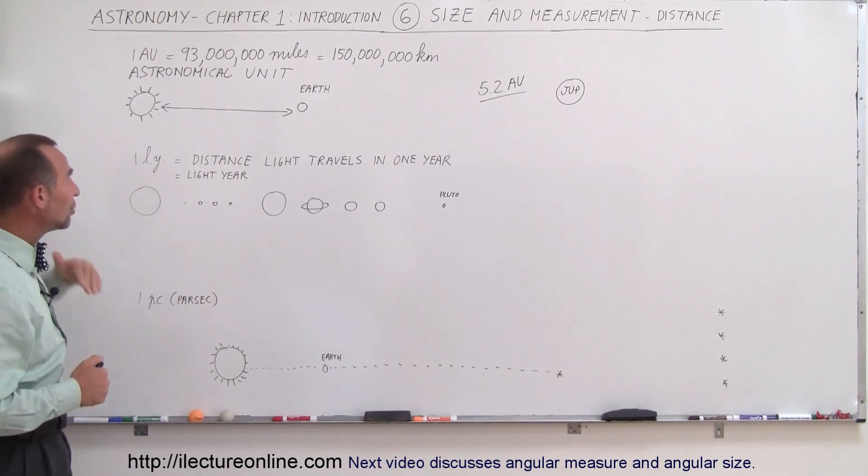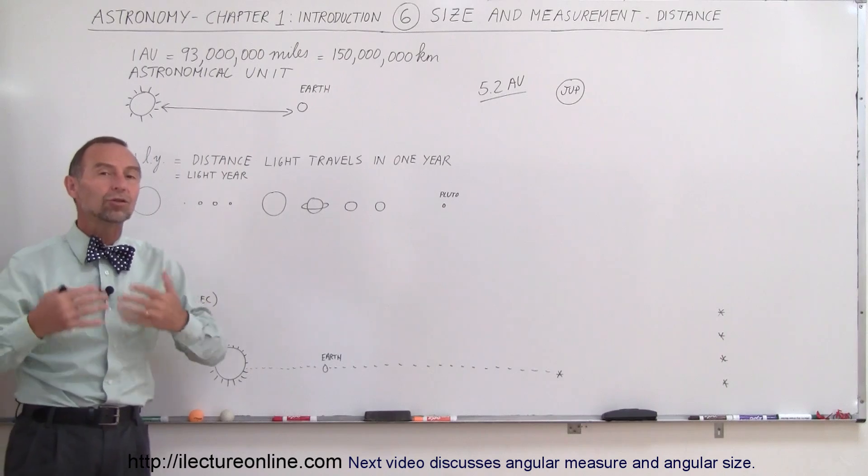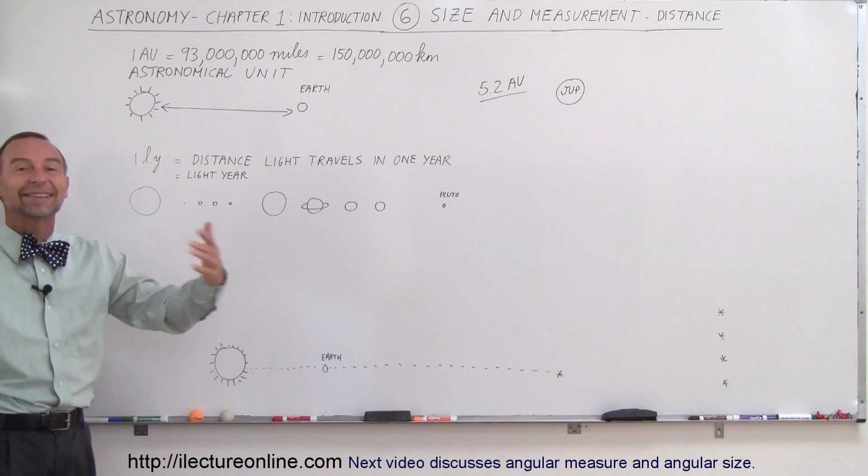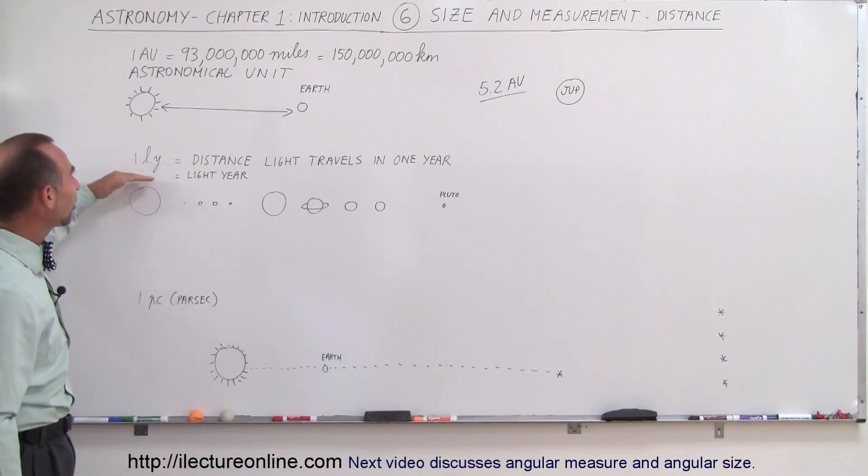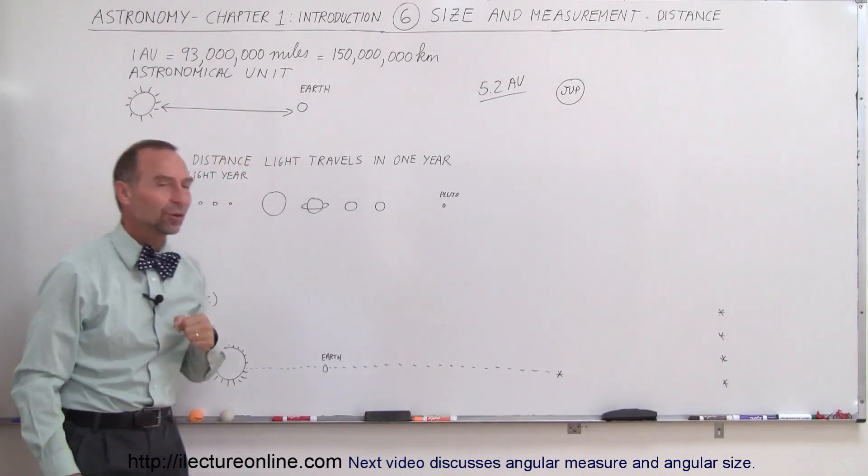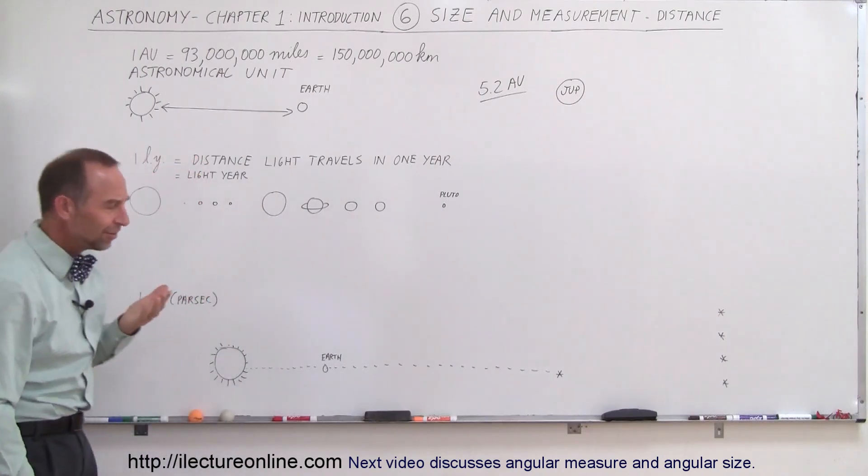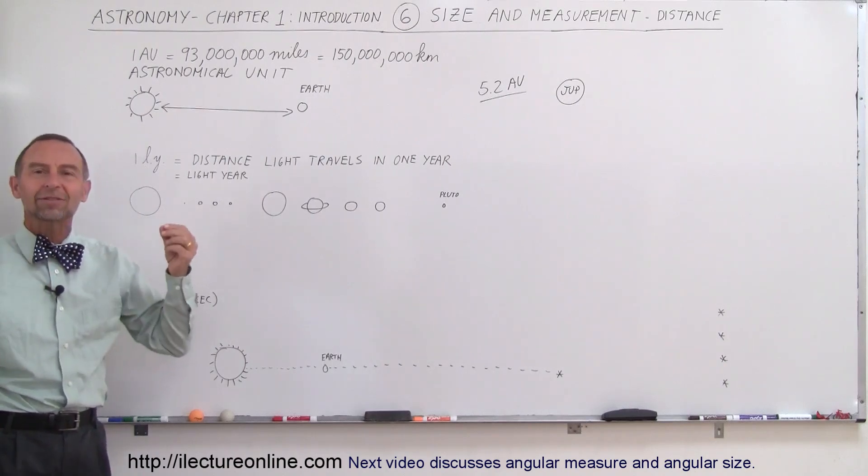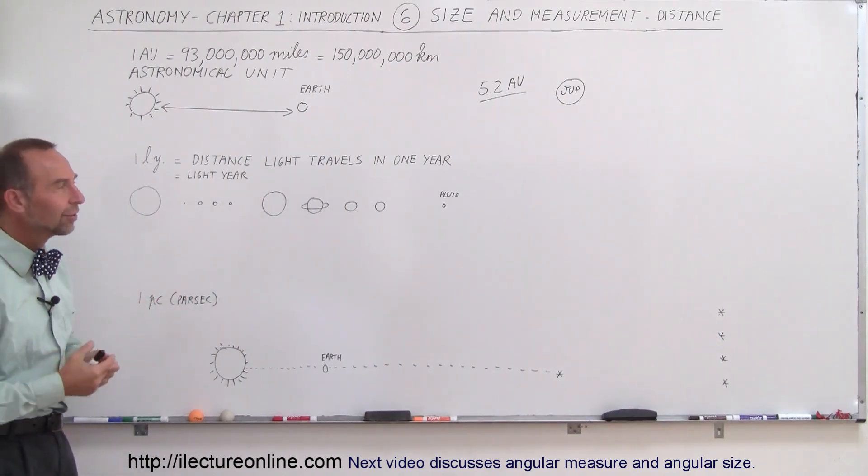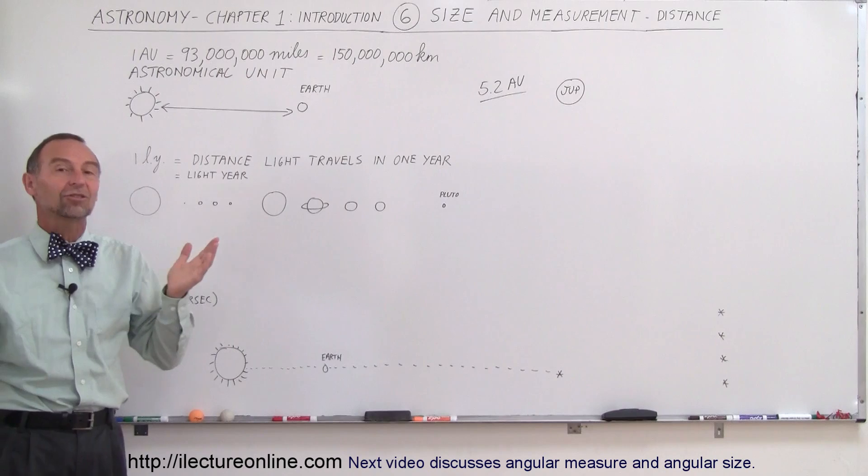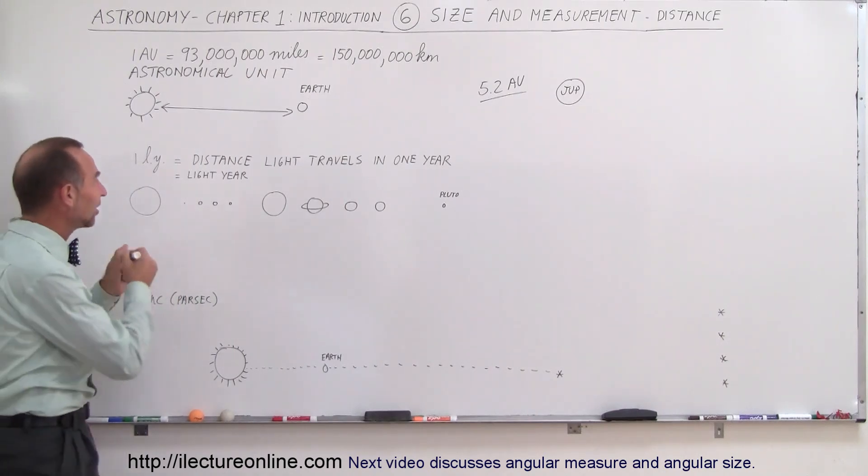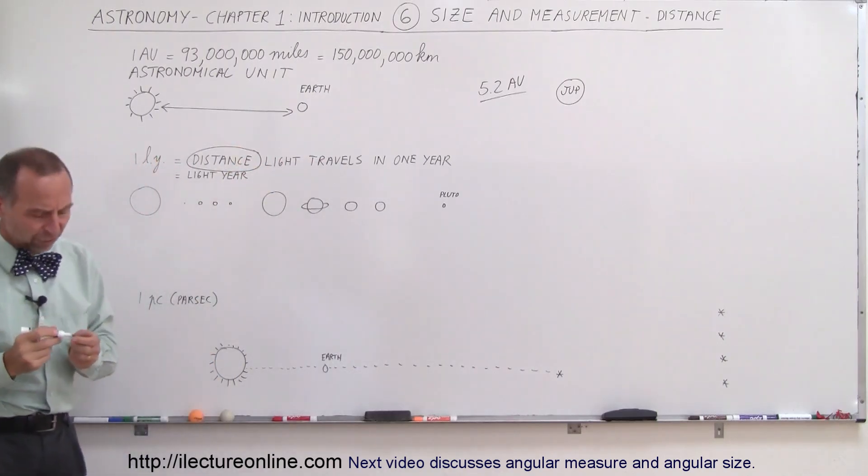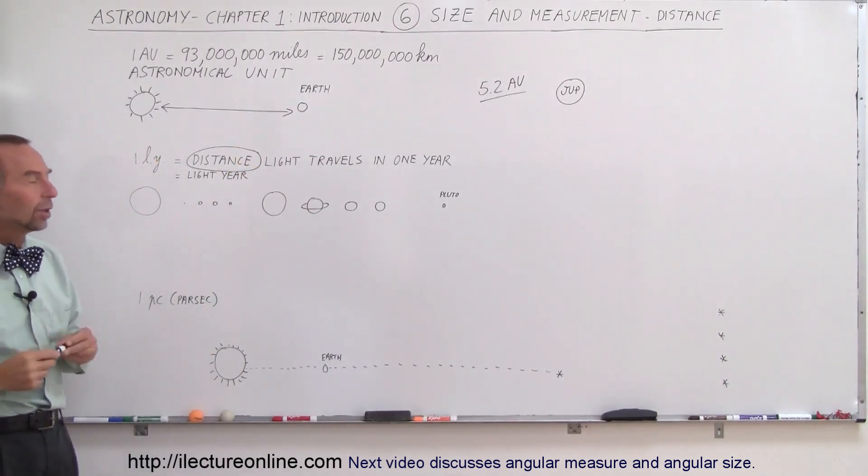Okay, the next measurement that we use, and this is probably the most commonly used throughout the universe, or not throughout the universe, I should say, but for measuring things throughout the universe, is called the light year. It's the distance light travels in one year. Now, the name is a little bit odd, because when you think about the term light year, you think about time. A year is a unit of time, but yet a light year is actually a unit of distance. It's the distance, and this is the key word, it's the distance light travels in one year.